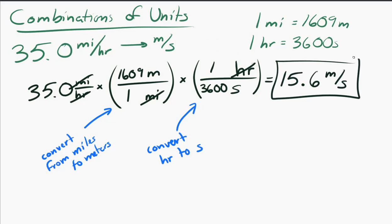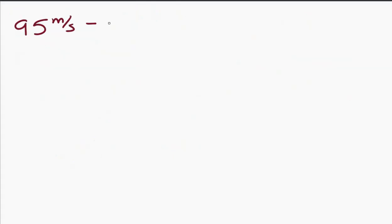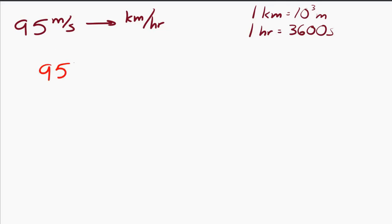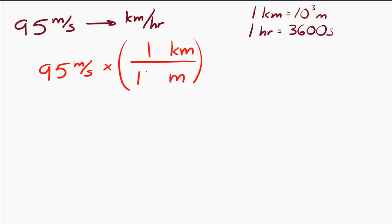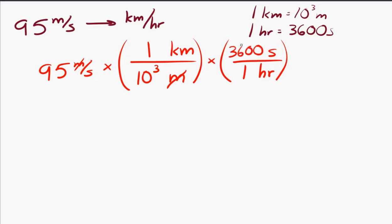Let's try 95 meters per second converted to kilometers per hour, using 1 kilometer = 10 to the 3 meters and 1 hour = 3,600 seconds. The first conversion factor handles meters to kilometers — meters annihilate, left with kilometers. The second handles seconds: since seconds start in the denominator, they go in the numerator of the conversion factor to cancel out, and hours go in the denominator of the conversion factor. I end up with 342 kilometers per hour.